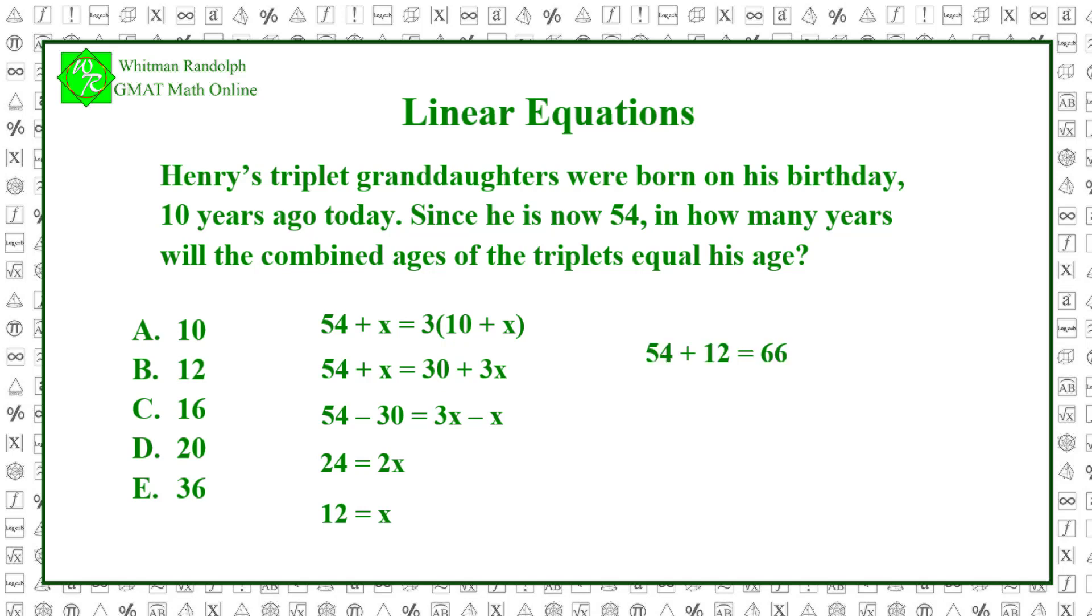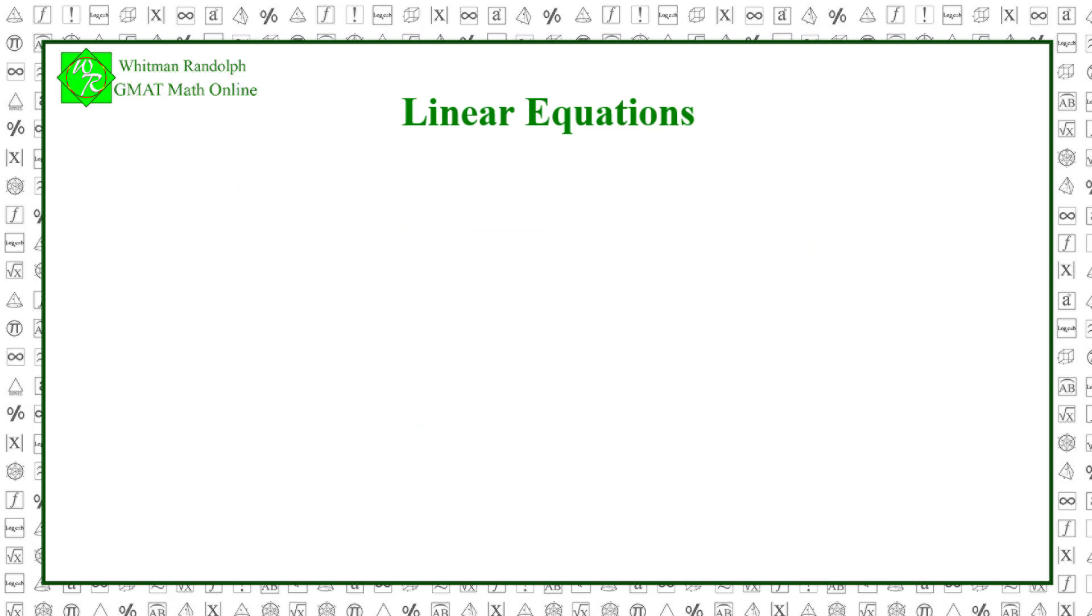In 12 years, Henry will be 66, and the triplets will be 22. Since 3 times 22 equals 66, the combined ages of the triplets will equal Henry's age. So, the correct answer is B.